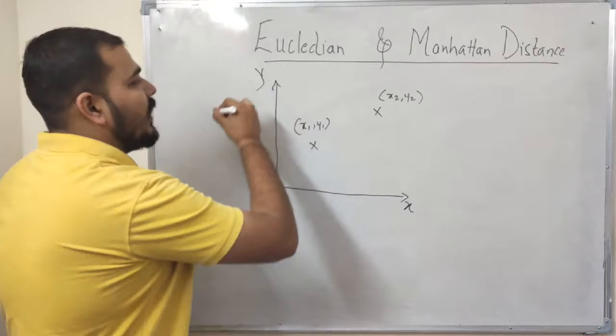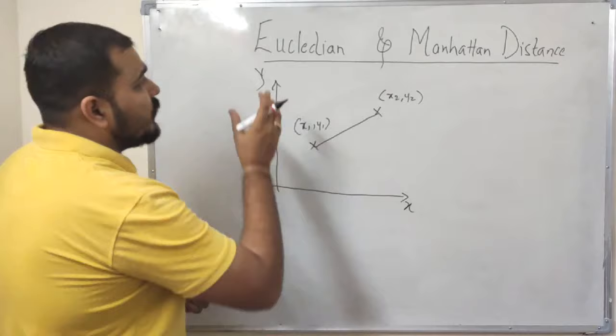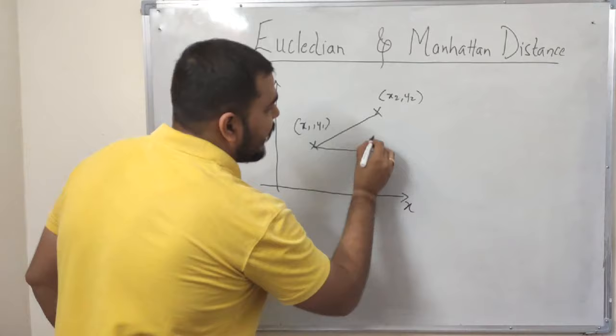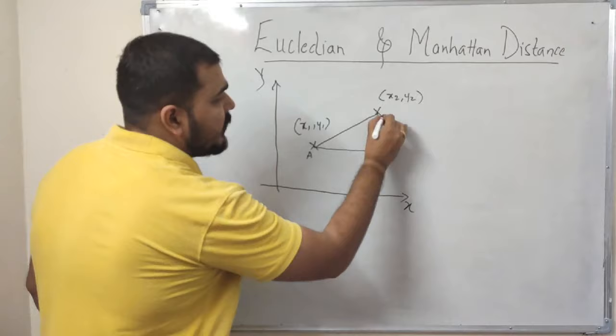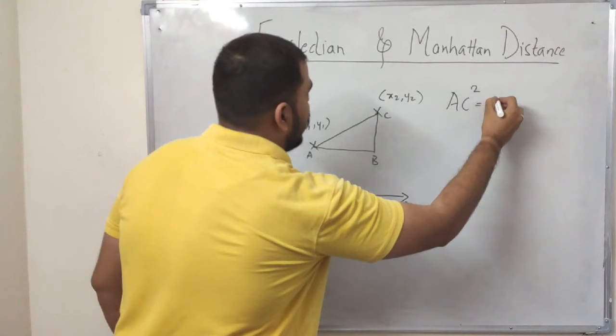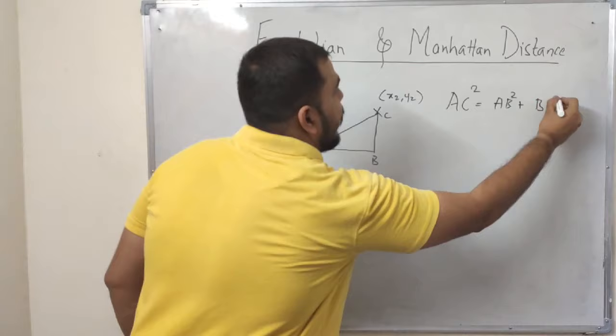Now in order to find the distance between them, I will first of all show you how Euclidean distance is basically calculated. Euclidean distance is basically calculated based on the Pythagoras theorem. Let me consider that I have three points A, B, C. Now based on the Pythagoras theorem, what we have the formula AC square is equal to AB square plus BC square.